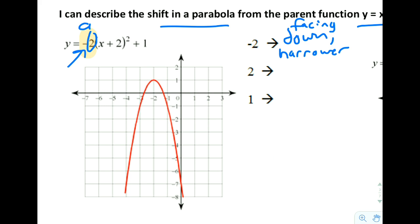And when it's negative 2, we get something that's narrower. It's a skinnier graph. So what we see from this negative 2 here is that it is facing down and it is narrower.